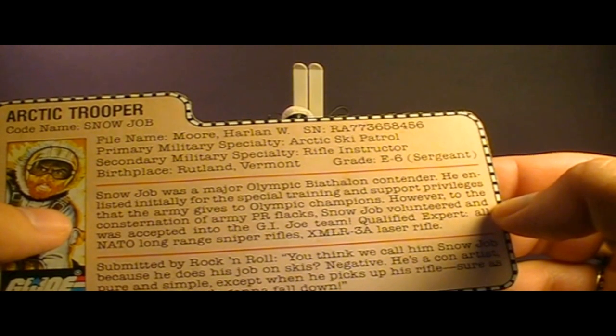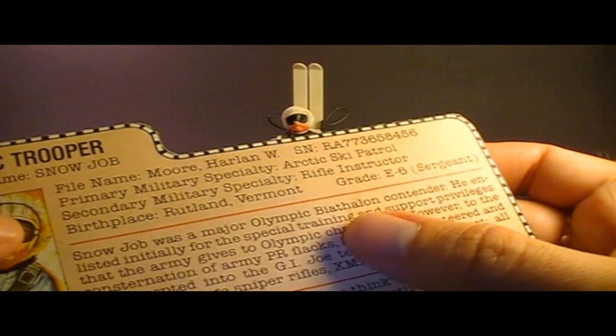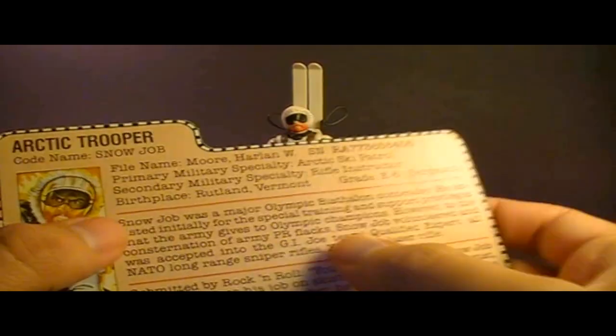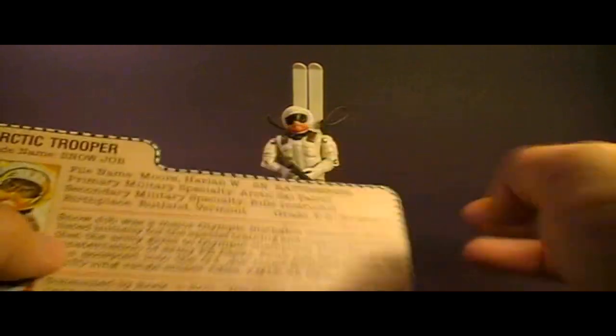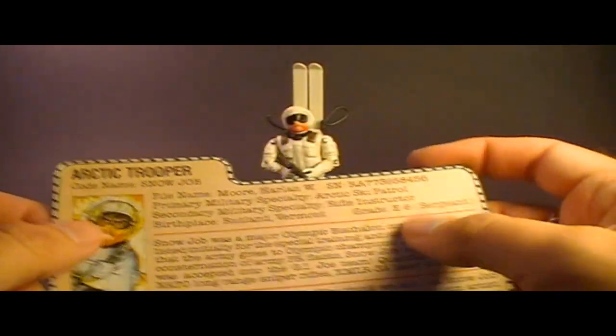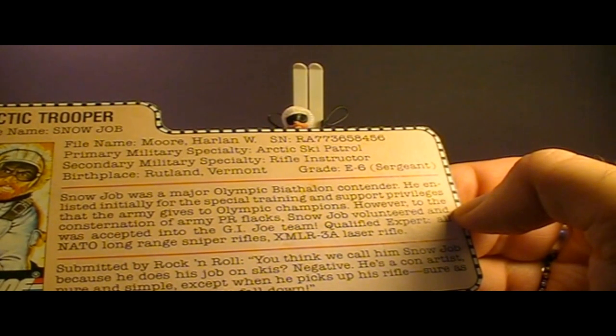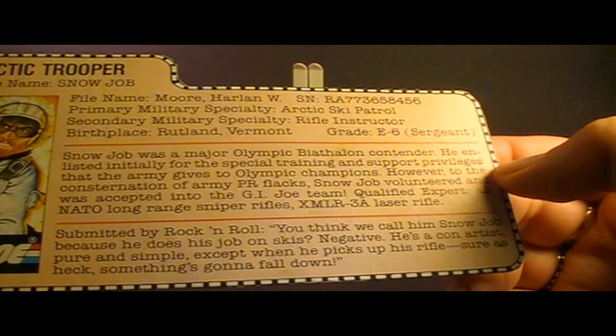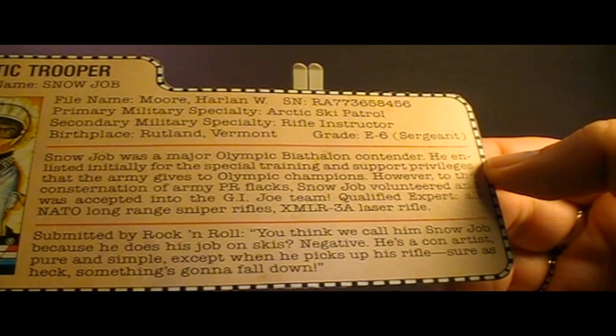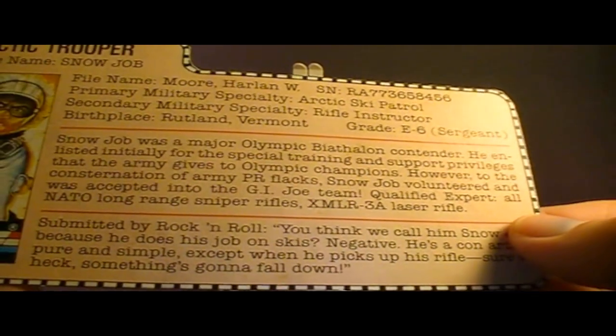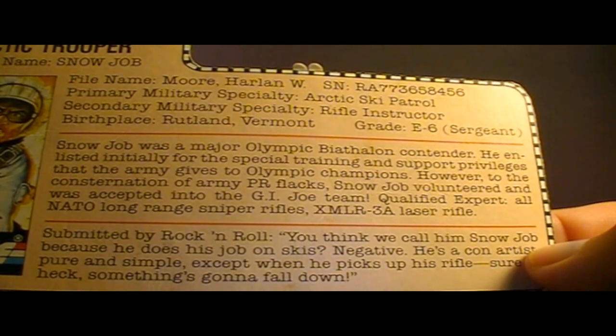This middle section here says, Snowjob was a major Olympic biathlon contender. Now, weirdly, I think the word biathlon is misspelled on the card. A biathlon is an Olympic event that combines cross-country skiing and rifle shooting, which I guess is perfect for the character of Snowjob. He enlisted initially for the special training and support privileges that the Army gives to Olympic champions. However, to the consternation of Army PR flags, Snowjob volunteered and was accepted into the G.I. Joe team. Qualified expert, all NATO long-range sniper rifles and the XMLR 3A laser rifle.